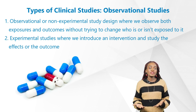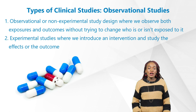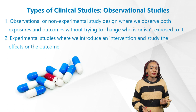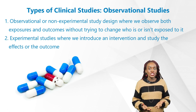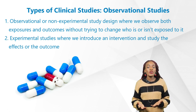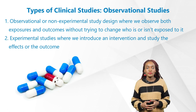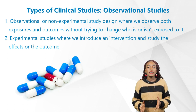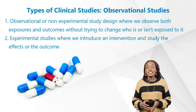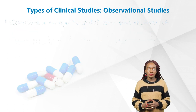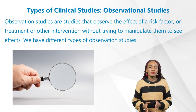There are different types of study designs. Overall, we have two main groups: one, observational or non-experimental studies, where we observe both exposures and outcomes without trying to change who is or isn't exposed; and two, experimental studies, where we introduce an intervention and study the effects or the outcome.